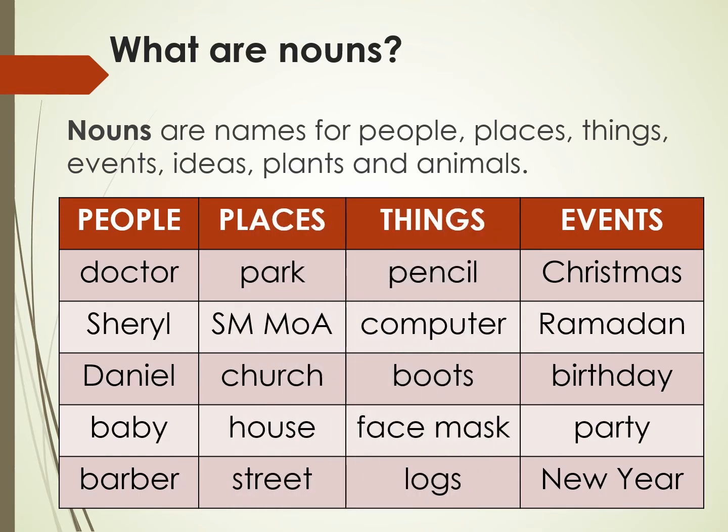For people, we have doctor, Cheryl, Daniel, Baby, and Barber. For places, we have park, SMOA, church, house, and street.